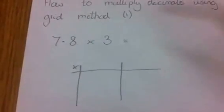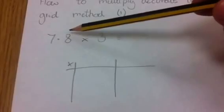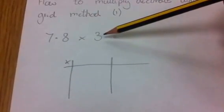So now we're sticking with the grid method, but looking at multiplying decimal numbers. I've got the question 7.8 multiplied by 3.